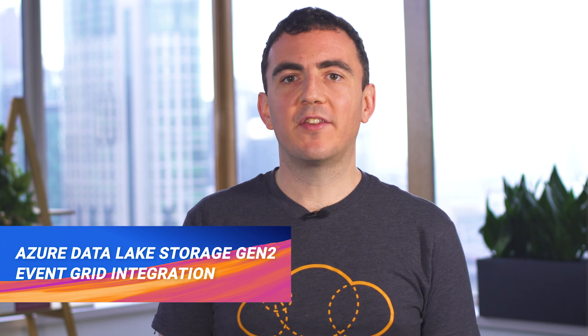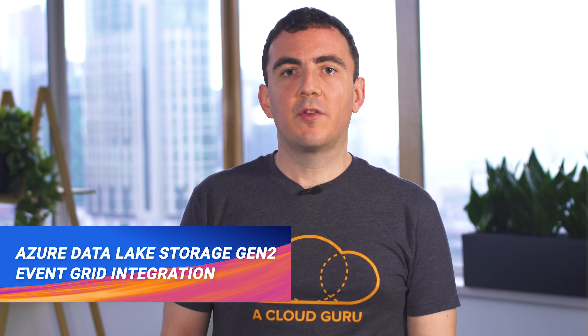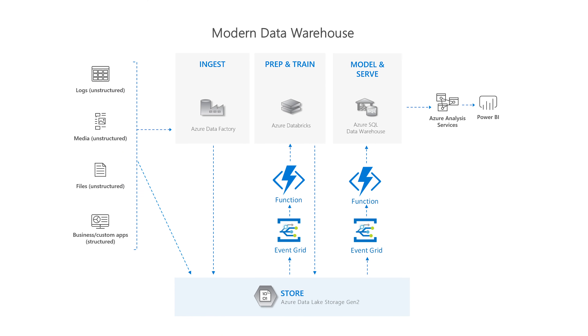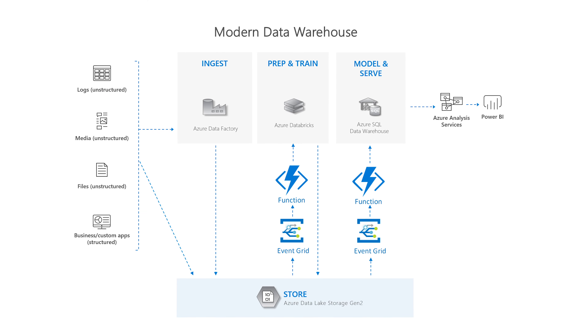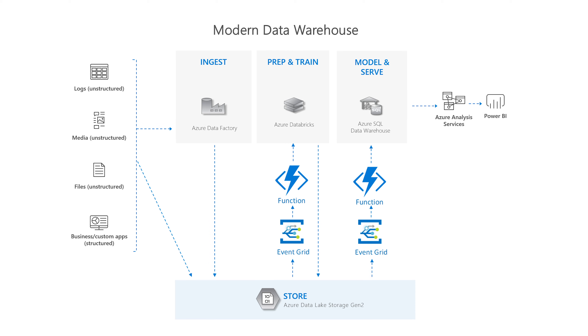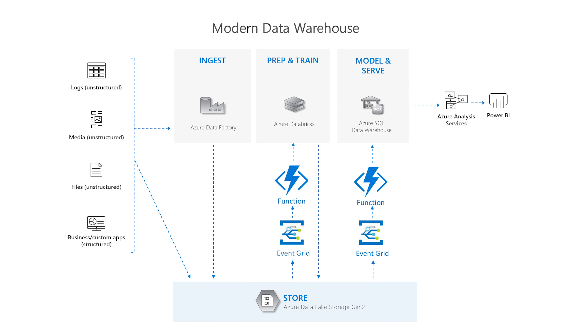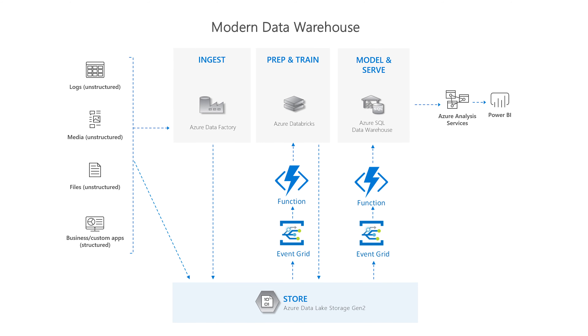Azure Data Lake Storage Gen 2 — or let's call it DL2 as we're friends — is used to provide storage to both structured and unstructured data. As of this week, DL2 generates events which are consumable by Azure Event Grid. We can now use this to be aware of changes to individual files, to kick off things like perhaps an Azure Databricks job, or to let other subscribers such as Azure Functions and Logic Apps know.